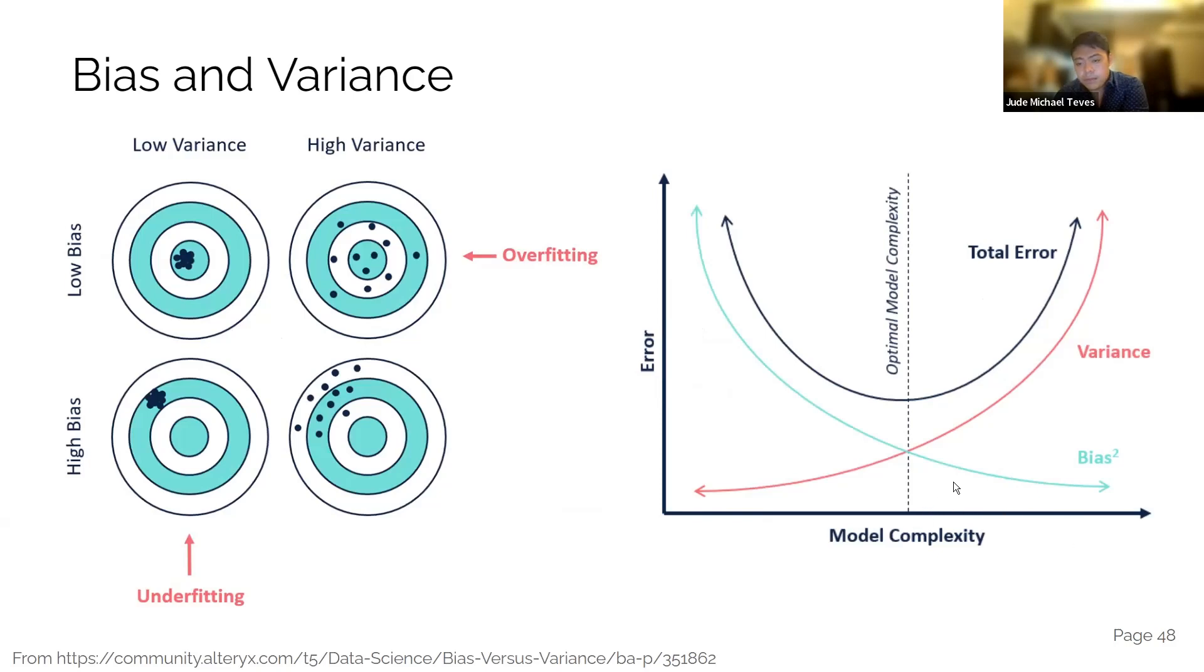But what happens is the variance also increases. That means you're having a higher test set error. So it's a balance really trying to figure out which one is just enough for your particular data set.